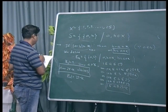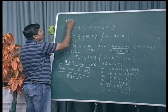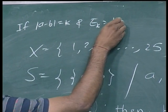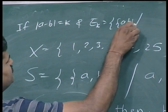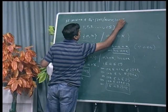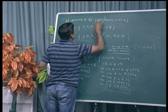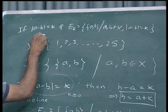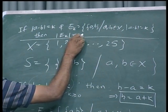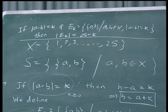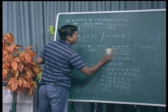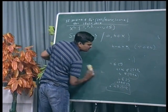To summarize the formula: if mod of a minus b equals k and E_k is the set of all pairs (a, b) in X with mod of a minus b equal to k, then mod of E_k equals 25 minus k. Keeping this formula in mind, we consider the second problem.